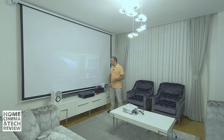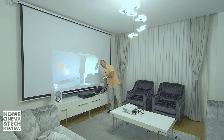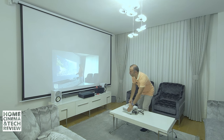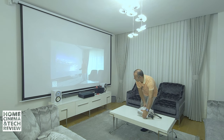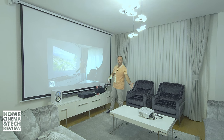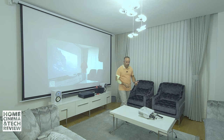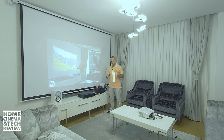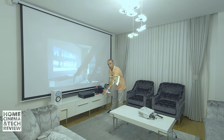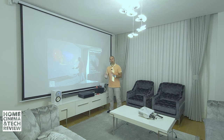Throw ratio is what determines where you have to place your projector relative to the screen. If you have a shorter throw projector and want a 100-inch image, you need to place it around 1.6 to 1.7 meters away. That's a wide angle projector, not a long throw. But you can have a shorter throw projector that creates the same image from just 1 to 1.2 meters away — those are called short throw projectors.